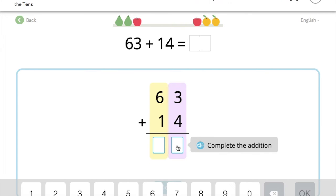Okay. 3 plus 4? 7. 6 plus 1? Did you say 7? Yep. 77.